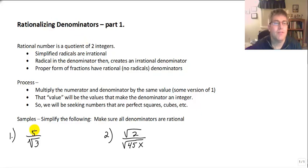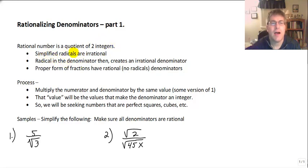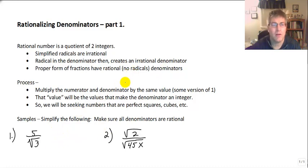Welcome back. In this video, we are going to work with rational expressions in which we have radicals in the denominator. Since a rational number is a quotient of two integers, simplified radicals are generally irrational. So a radical in the denominator creates an irrational denominator. Proper form of fractions have no radicals in the denominator — they are rational denominators. We don't want any square roots or cube roots in our denominators.